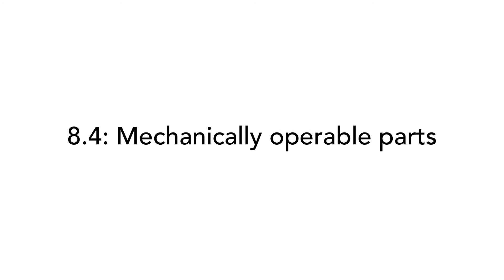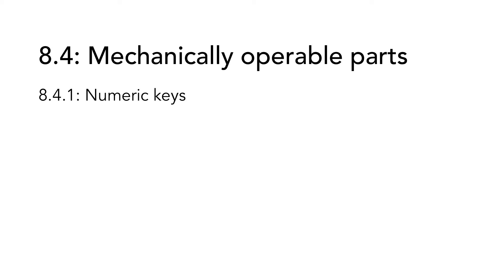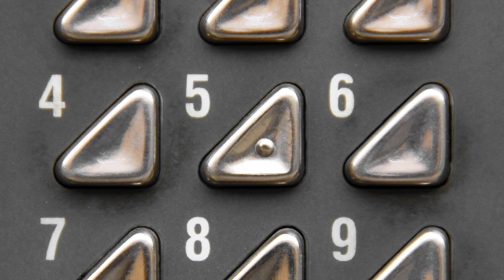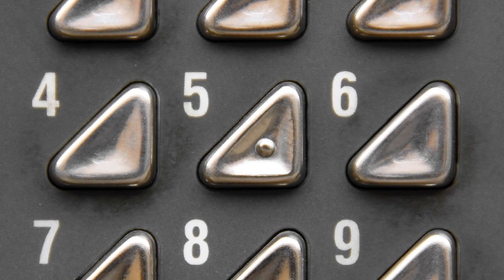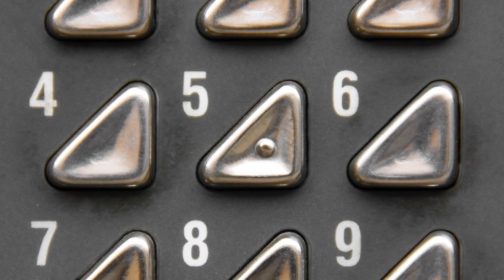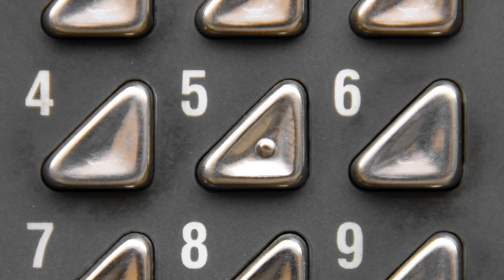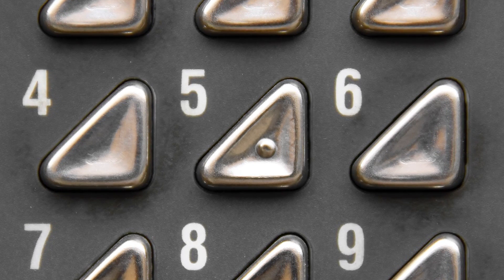The next subsection, 8.4, covers mechanically operable parts. The first requirement on mechanically operable parts has to do with numeric keys. When the ICT hardware includes a physical numeric keyboard designed in a rectangle, it must have a tactile number 5 in the middle to make it possible for a user who cannot see to distinguish it from the rest of the keys and thereby orient him or herself on the keyboard. Details on how to make tactile markers and further layout recommendations for a phone keyboard can be found in other standards and protocols.